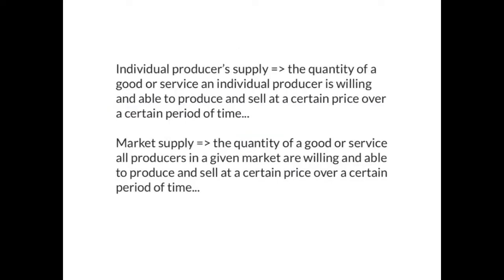So what is the difference between an individual producer's supply and market supply? The individual producer's supply is the quantity of a good or service an individual producer is willing and able to produce and sell at a certain price over a certain period of time. Market supply, on the other hand, is the quantity of a good or service that all producers in a given market are willing and able to produce and sell at a certain price over a certain period of time.